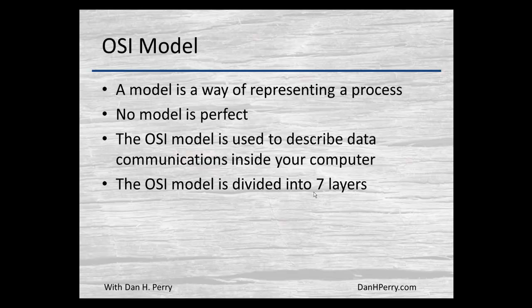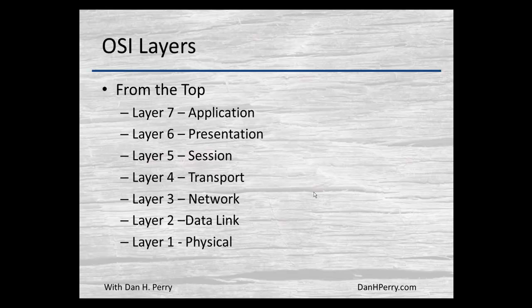The OSI model describes the communication process between computers. In order to describe that process, it has been broken down into seven layers. We'll look at another model later as well that only breaks the processes down into four layers.